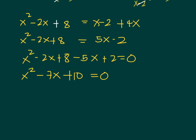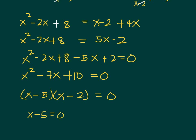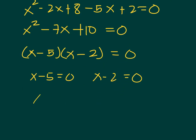From here, all we have to do is factor the left side. We use x and x for x squared, and 5 and 2 for 10, because the sum of 5 and 2 is 7. So the factored form is x minus 5 times x minus 2 equals 0. Setting each factor to zero: x minus 5 equals 0 or x minus 2 equals 0, which leads us to x equals 5 and x equals 2.